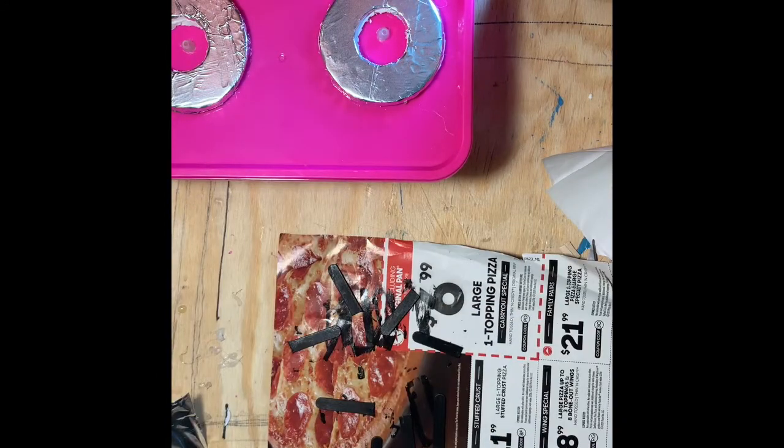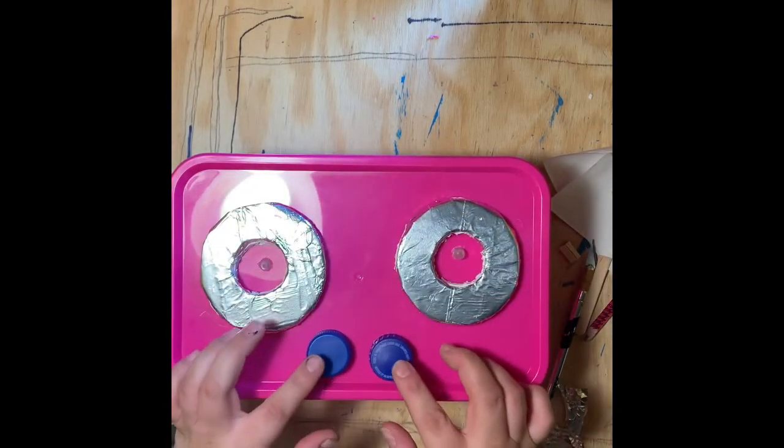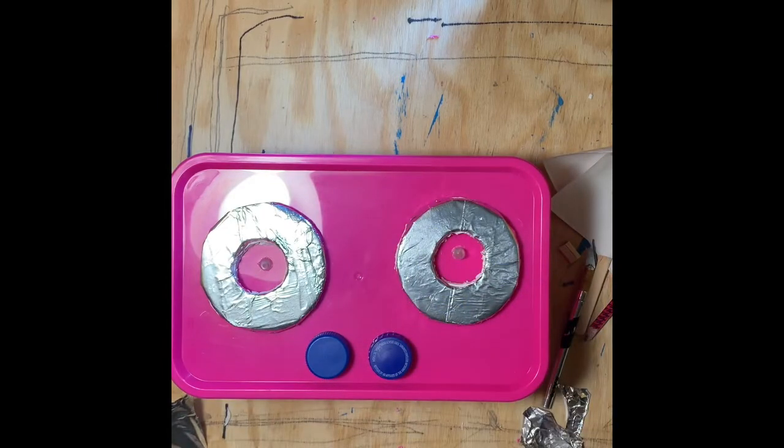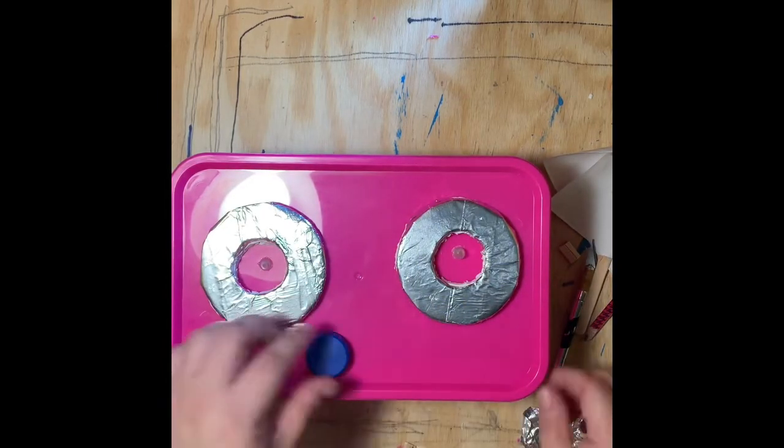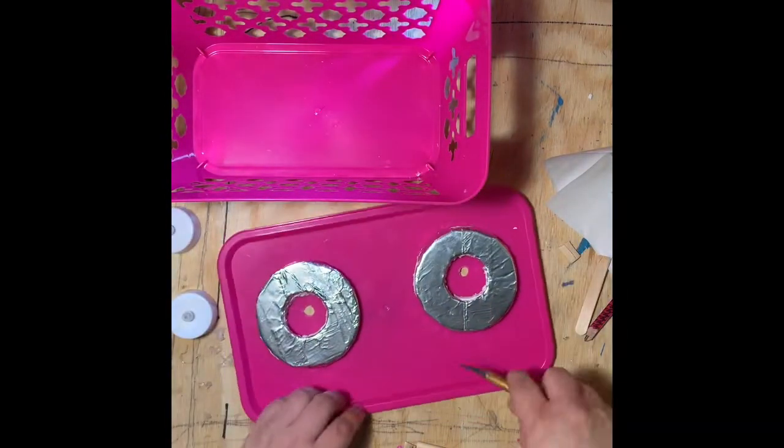While my popsicle sticks are drying, I'm going to move on to my knobs. I'm using two bottle cap tops for knobs and two dowels from Dollar Tree. I'm going to cut two holes in the lid for the dowels, just like I did for the tea lights.